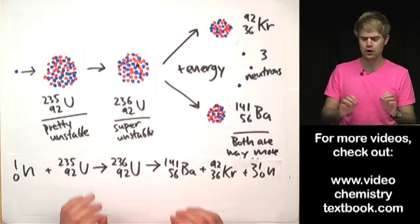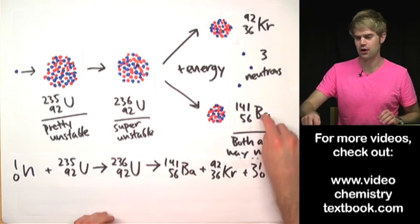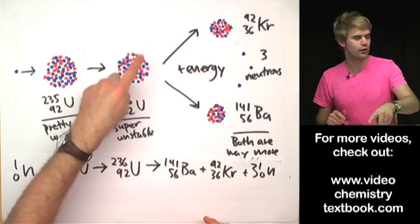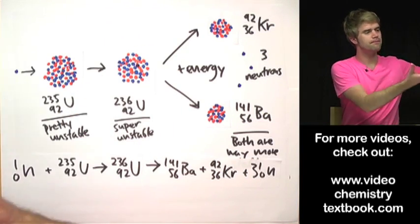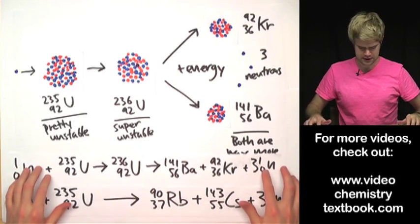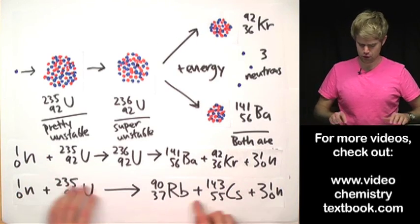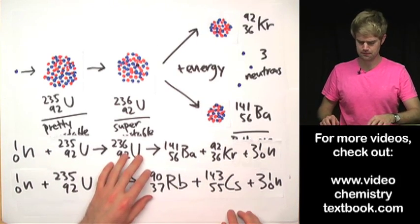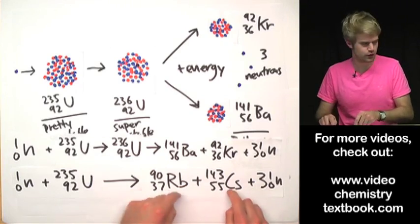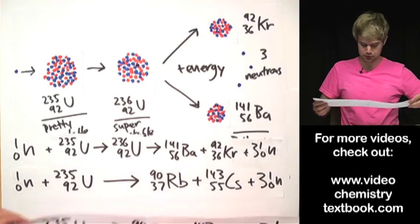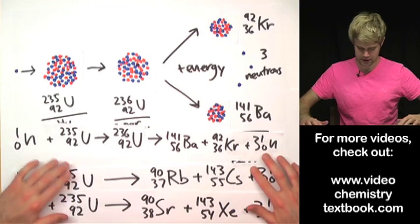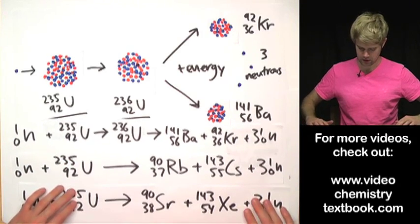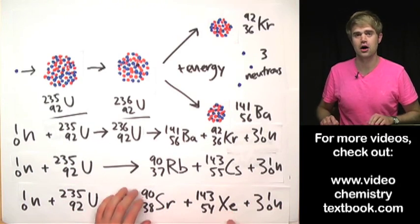Now it turns out that krypton and barium aren't the only atoms that uranium-236 can split into. When it splits, sometimes it can also form rubidium and cesium. It's just splitting a different way to create these. Or it can split another different way and create strontium and xenon.